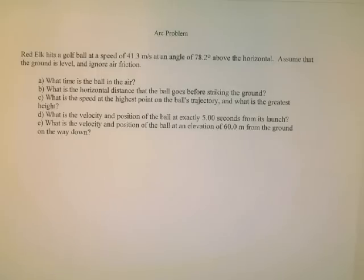Red Elk hits a golf ball at a speed of 41.3 meters per second at an angle of 78.2 degrees above the horizontal. Assume that the ground is level and ignore air friction. We're going to find what time the ball is in the air and the horizontal distance the ball goes before striking the ground.